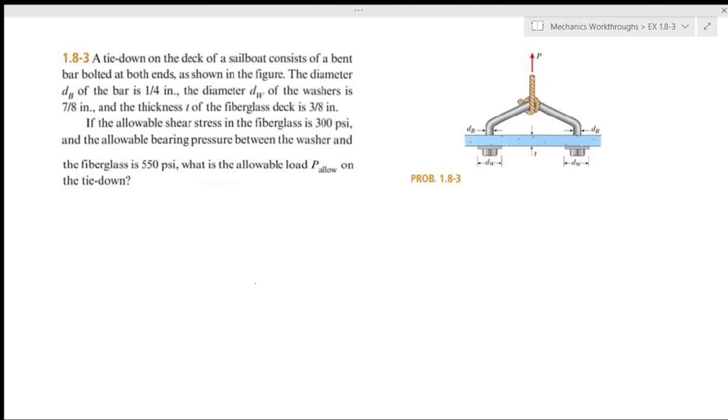The diameter db of the bar is 1/4 inch, the diameter dw of the washers is 7/8 inch, and the thickness t of the fiberglass deck is 3/8 inch.